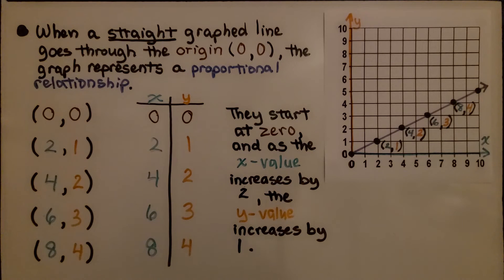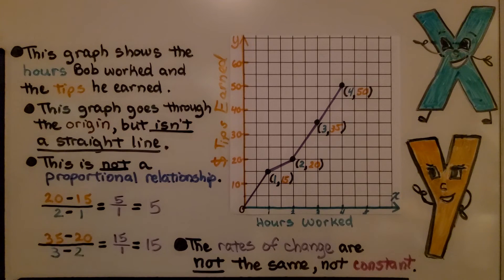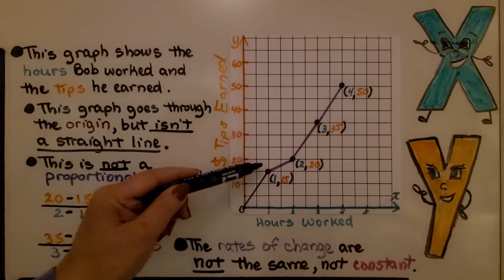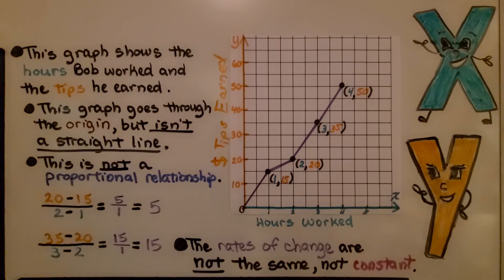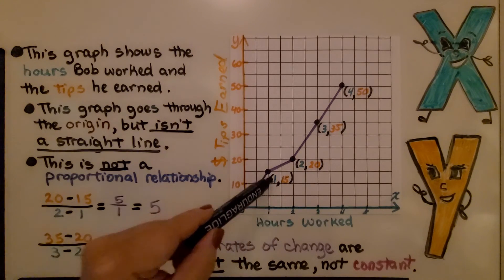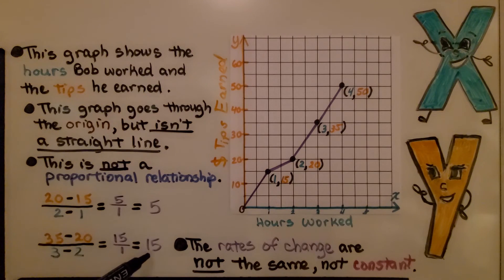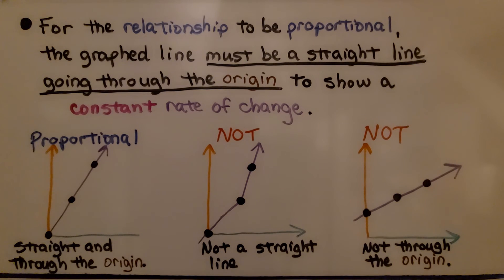This graph shows the hours Bob worked and the tips he earned. This graph goes through the origin, but isn't a straight line — it bends — so this is not a proportional relationship. The rates of change are not constant: (20 − 15) / (2 − 1) = 5, but (35 − 20) / (3 − 2) = 15. The rates of change are not the same, confirming this is not a proportional relationship — if it were, it would have been a straight line.